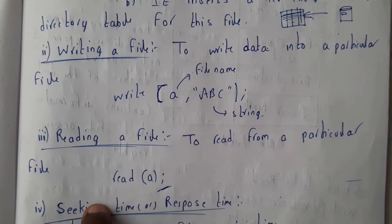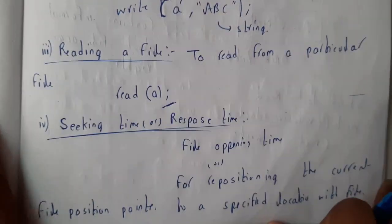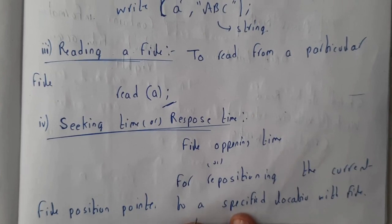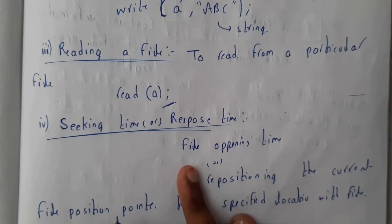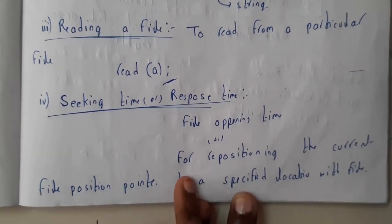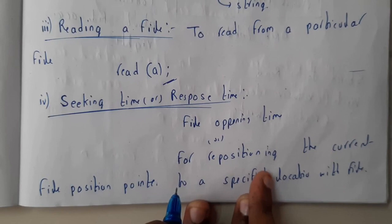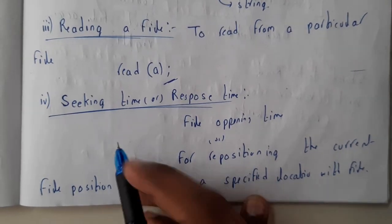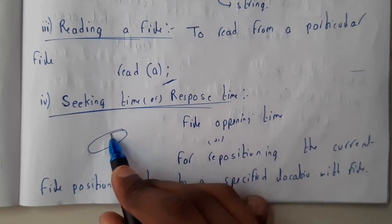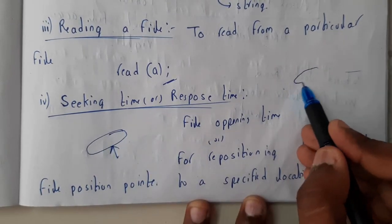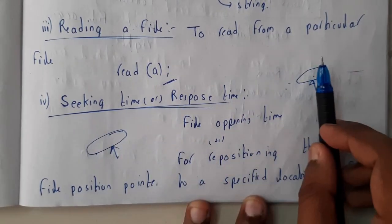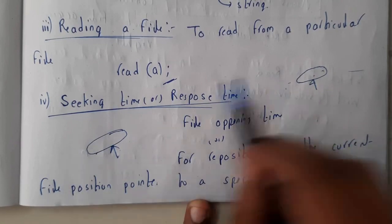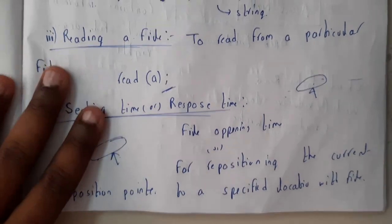Seek time is the minimum response time for a file operation — for example, the file opening time. Assume the pointer is currently located at some file 'abc' and now it needs to change to file 'a'. The time taken for this change of pointer location from one file to another is the response time, or in other words, the file opening time.